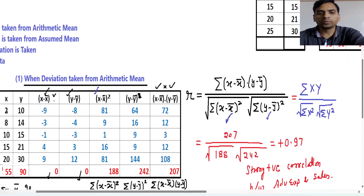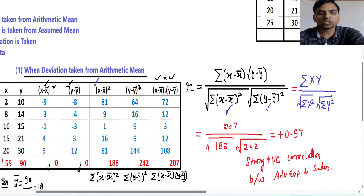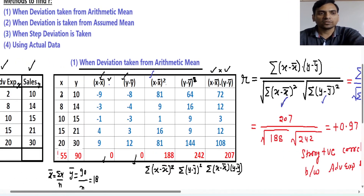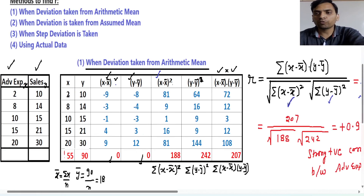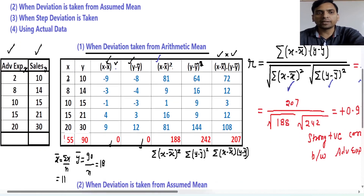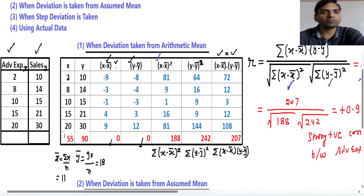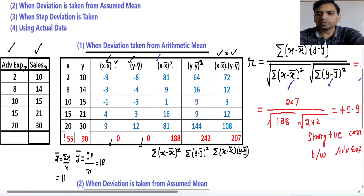I hope you understand this concept. In the next lecture we will see how to find the Karl Pearson coefficient of correlation using deviation taken from the assumed mean. Please like this video, subscribe to my channel. I am Garnit Koch. Have a nice day.